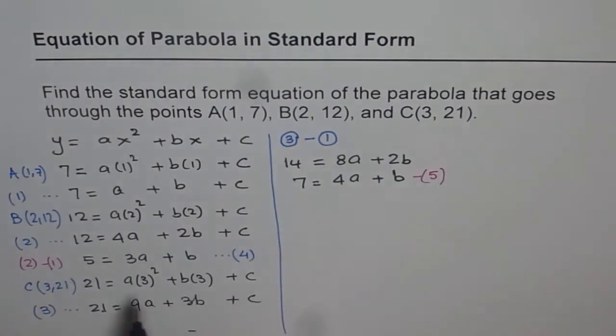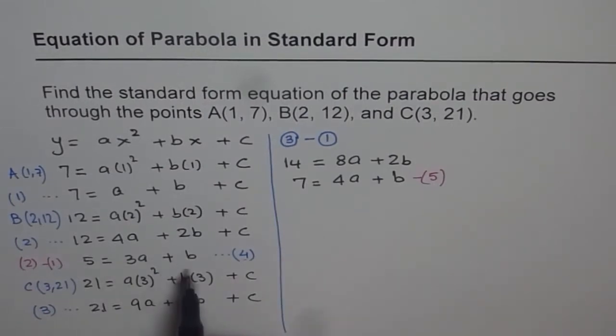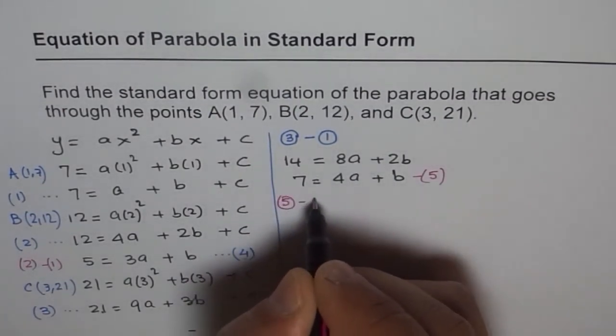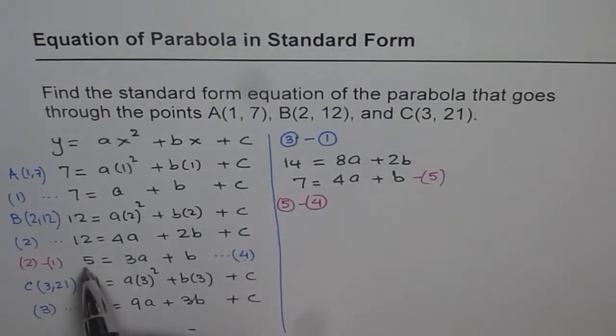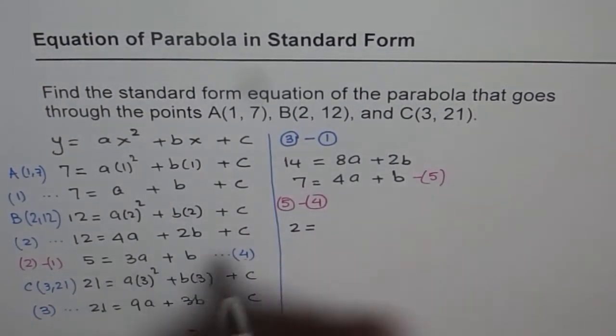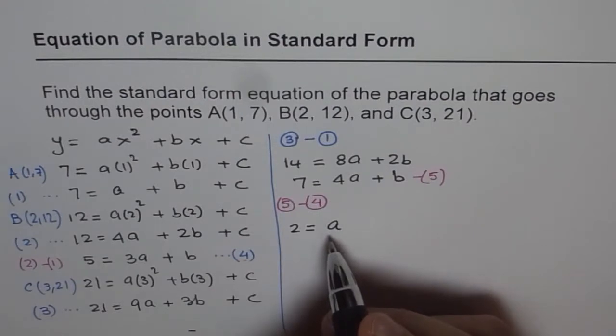Now we have equation 4 and 5 which have only two variables which are a and b. Now, if I do equation 5 minus 4, I can eliminate b. So we will do equation 5 minus equation 4. 7 minus 5 is 2. 4 minus 3 is a. So we get a equals 2.